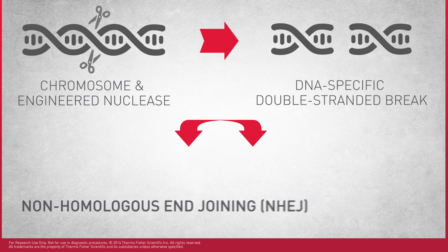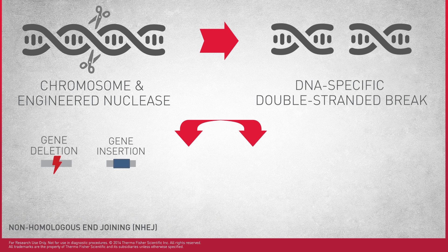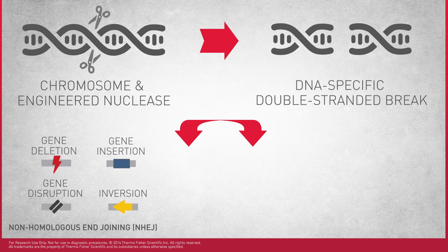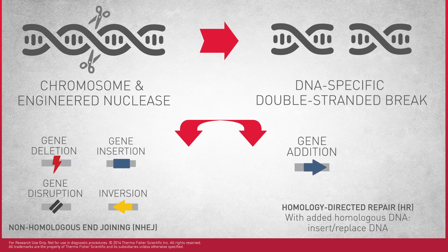Non-homologous end-joining leads to insertions, deletions, inversions, and gene disruption as DNA is ligated randomly. When homologous DNA is added, the double-stranded breaks are repaired with homology-directed repair. This targeted repair allows for precise gene additions or corrections.